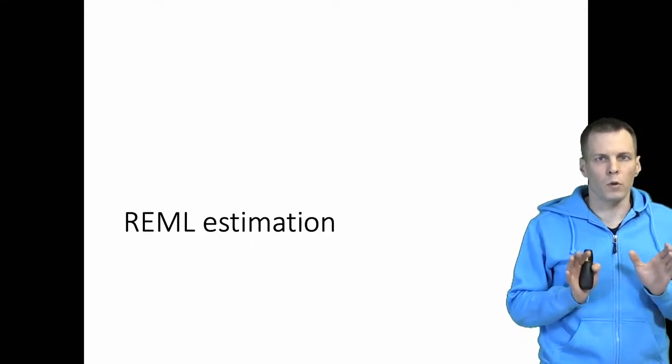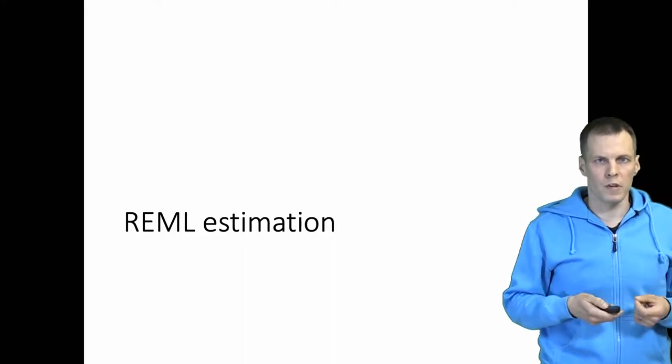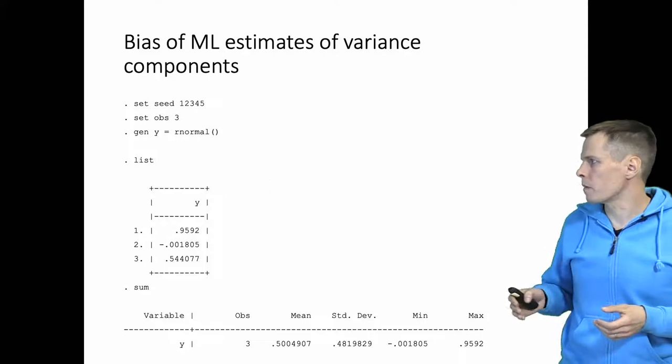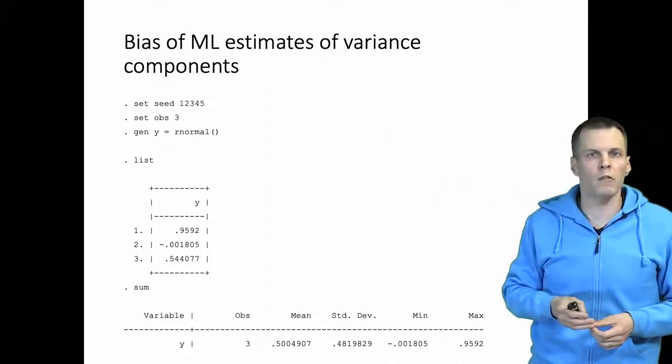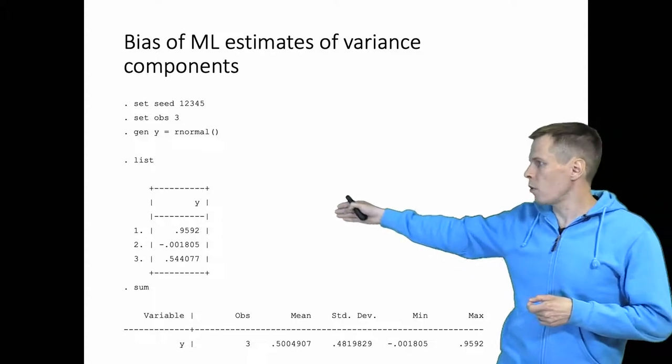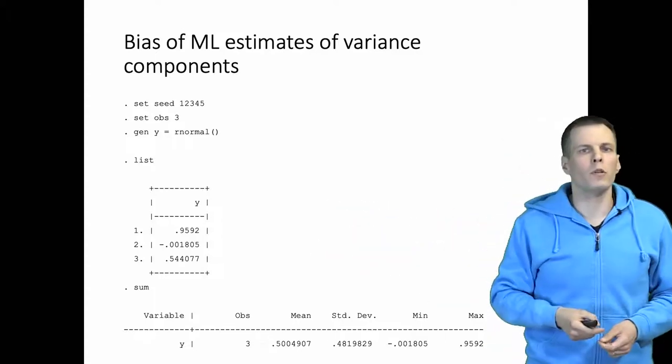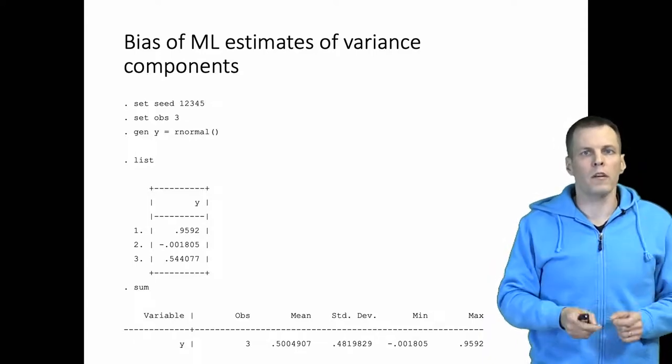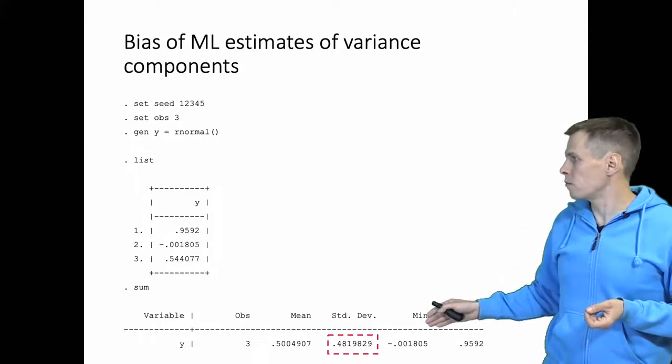Let's take a look at what maximum likelihood estimation does in small samples when we try to estimate the variance components. I'm using STATA for this example. So we have here a data set artificially generated, three observations of y: 0.9, about 0, and about 0.5, and we want to calculate the mean and standard deviation. We are particularly interested in the standard deviation which in this case is 0.481.